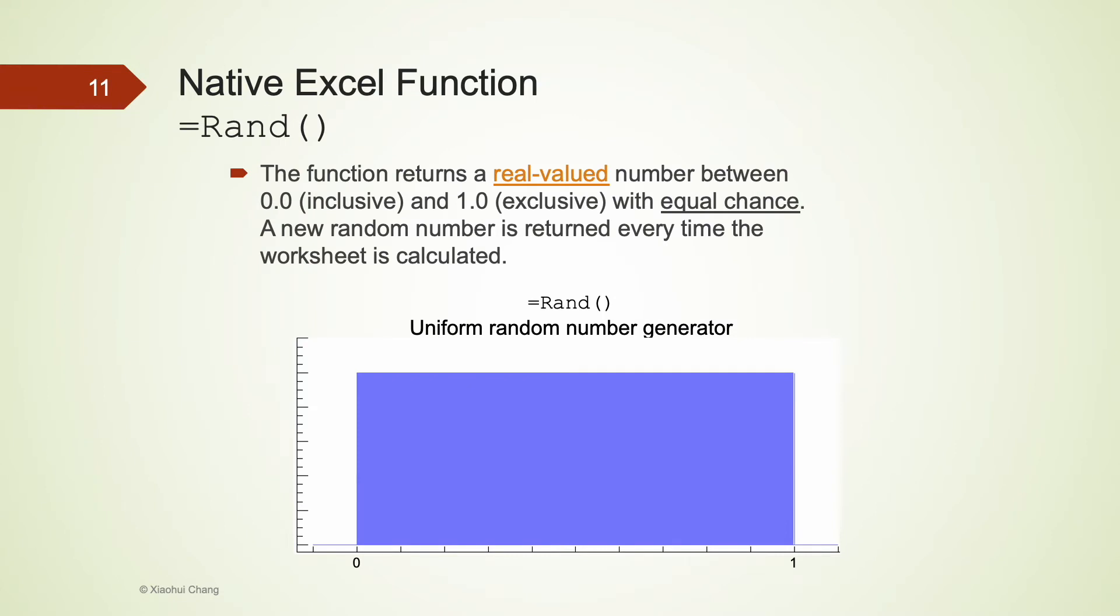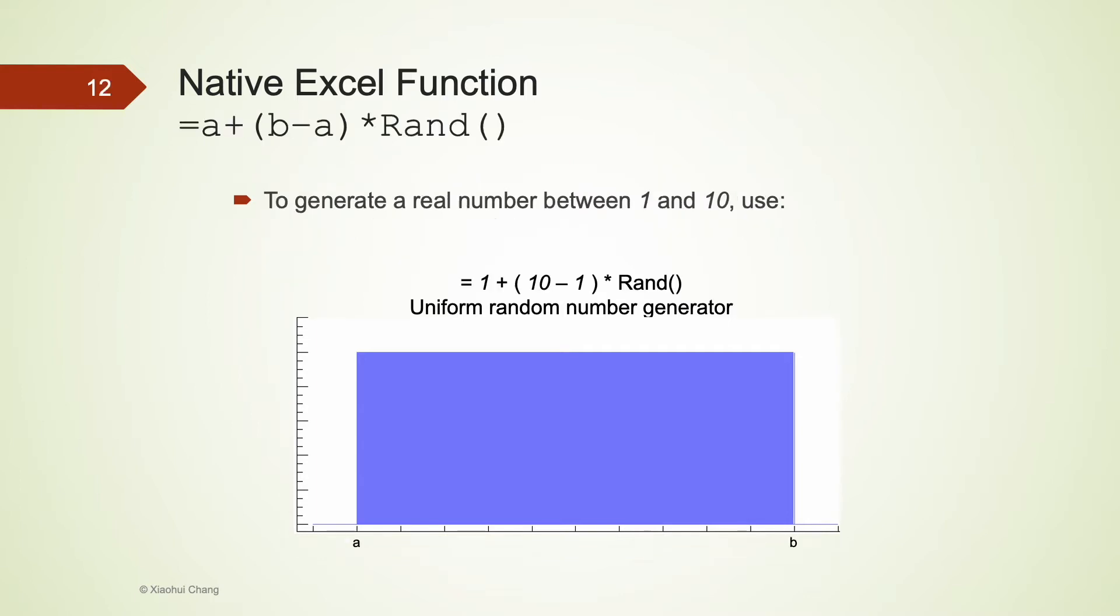The next function is RAND, which does not have to take any argument. RAND returns a real valued number, not integers, between 0 and 1 with equal chance. That is the same as saying simulating a uniform random number between 0 and 1. We are probably more interested in simulating a real number uniformly between 1 and 10. To do that, we can use this formula based on RAND. That is 1 plus 9 multiplied by RAND. More generally, to simulate a real number between any A and B, we can use A plus B minus A multiplied by RAND, or the smaller number plus the difference between the two numbers multiply RAND.